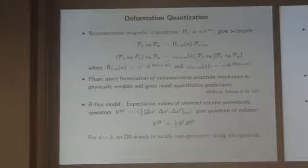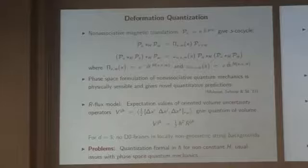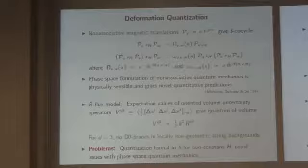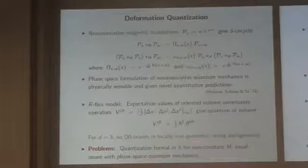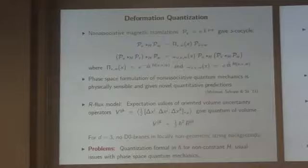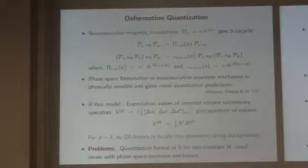So this nicely reproduces that. The problems with this approach: for constant H we're okay because we have a nice explicit formula. But if you want to go beyond that case and look at more general curvatures of the magnetic field, the quantization formula is only formal in h-bar — a quantization over the ring of formal power series. From a physics perspective that's not so nice. And the issues with phase space quantum mechanics in the standard case don't disappear here either. So deformation quantization does it cleanly in a sense, but we still want something closer to an operator-state correspondence — some kind of Hilbert space picture.